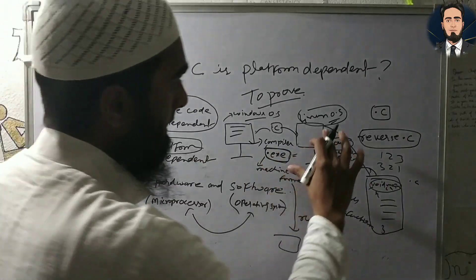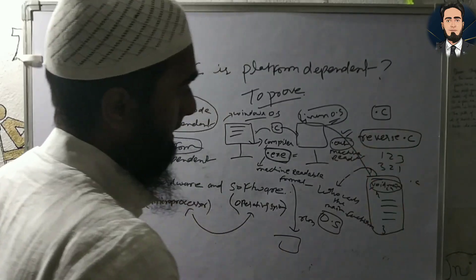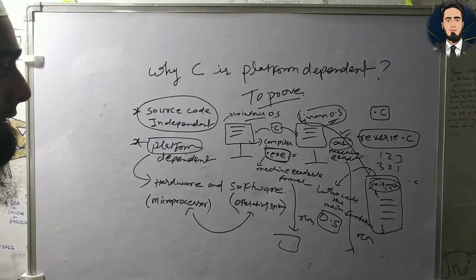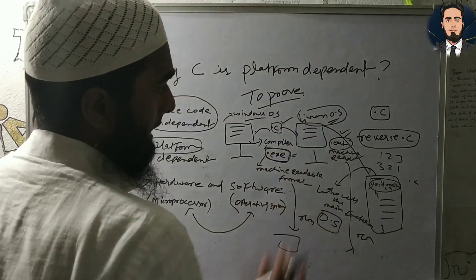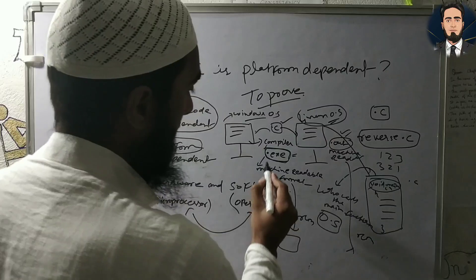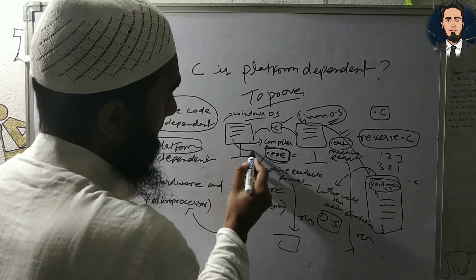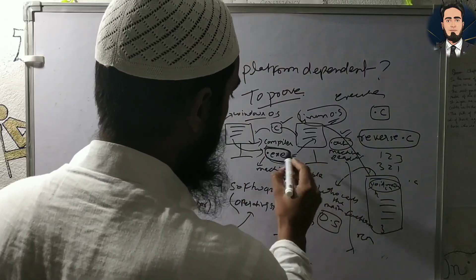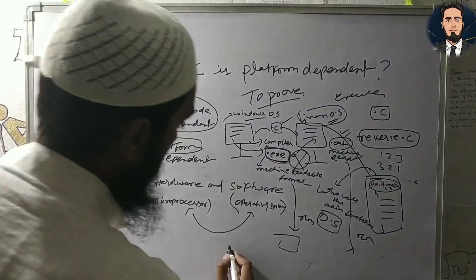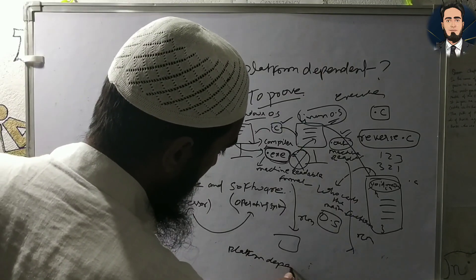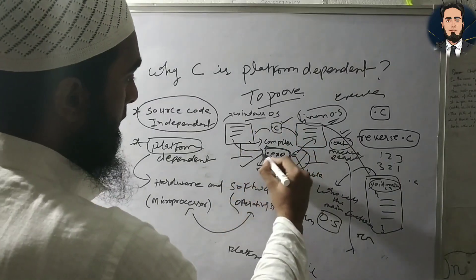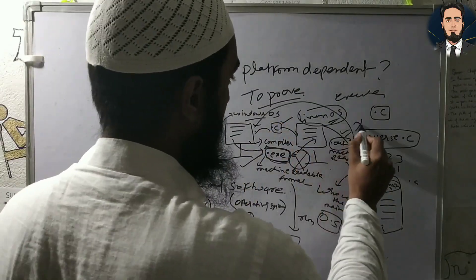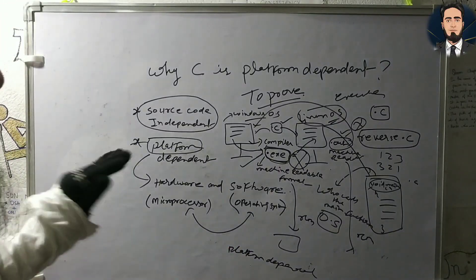.exe file will build on Windows, machine readable format. But you can get this .c file and take it to this computer, but you cannot take this .exe file which is from one operating system and run or execute it on another. That's why we can say that C is platform dependent.